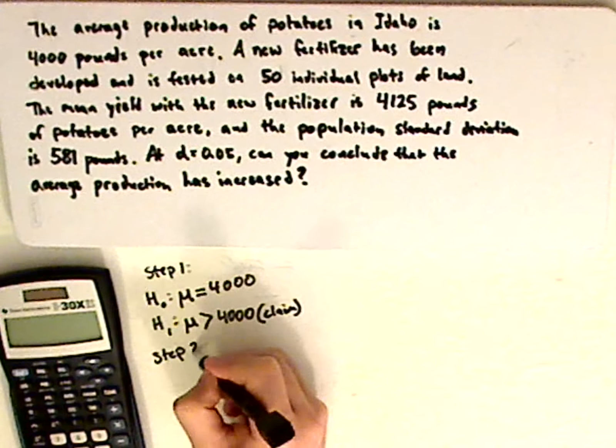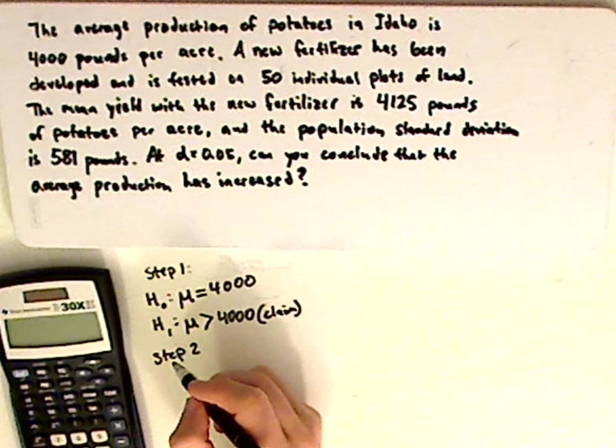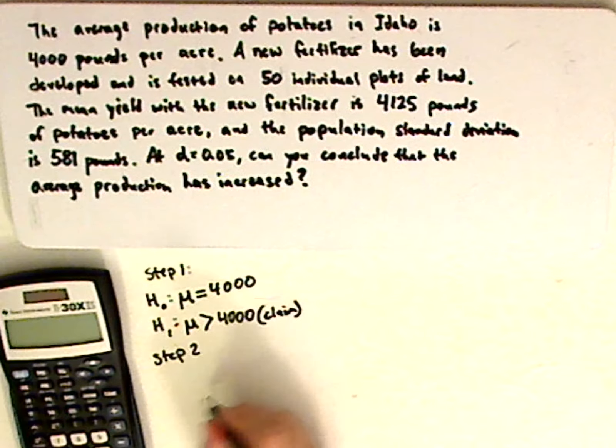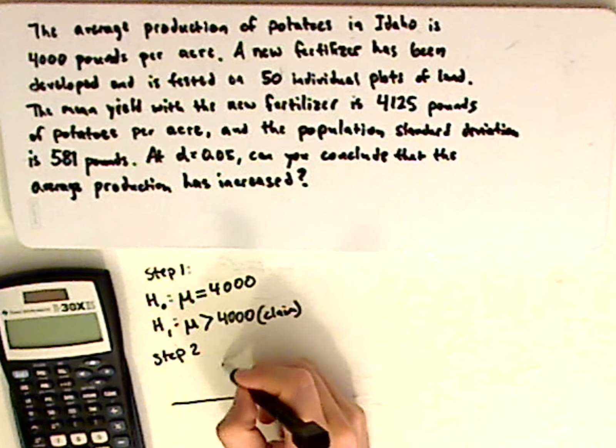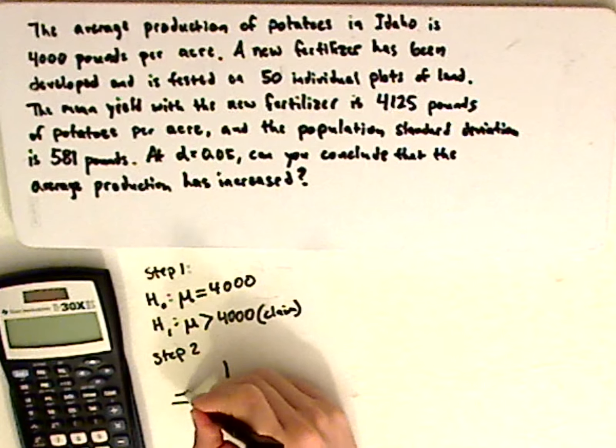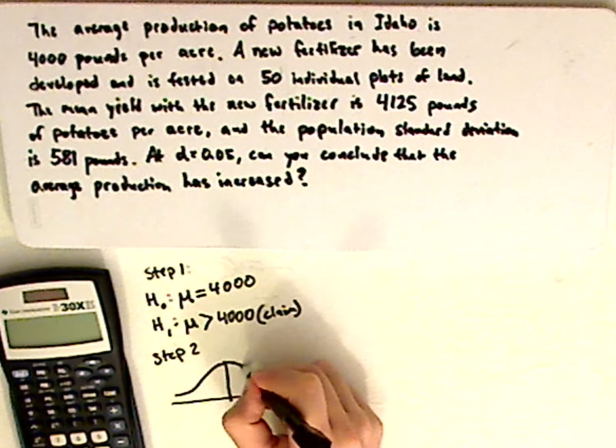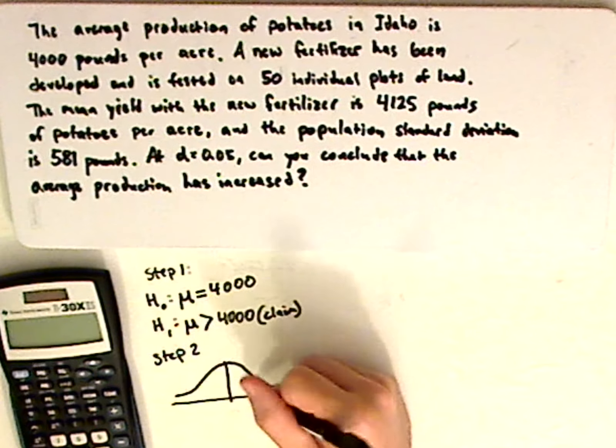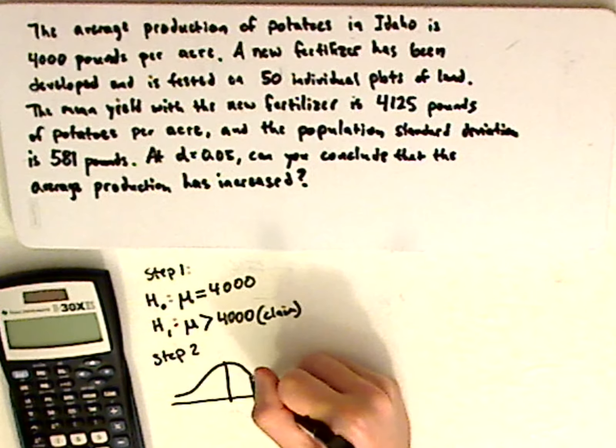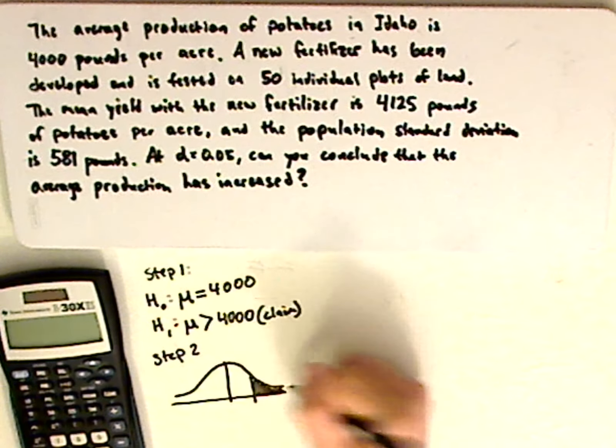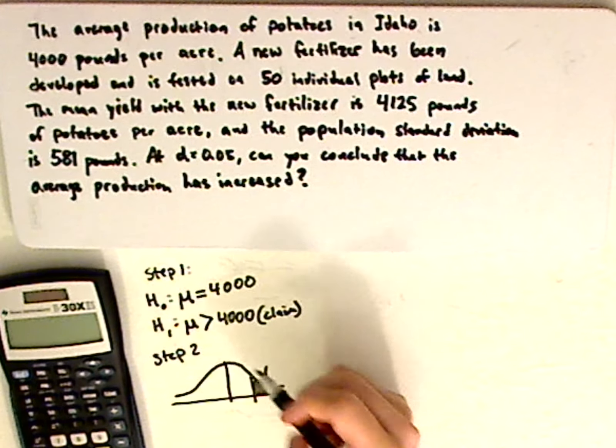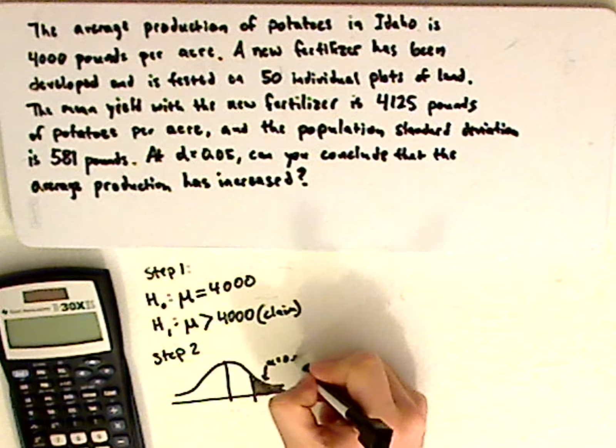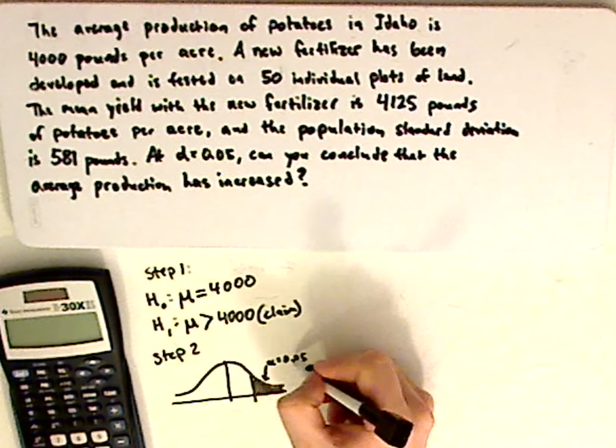Step number two is you want to find your critical values. With your critical values, you want to first make the critical region, or your rejection region. Now, since it's greater than, it's going to be right-tailed, it's going to look like this, and this area right here, your rejection region is your alpha, 0.05.